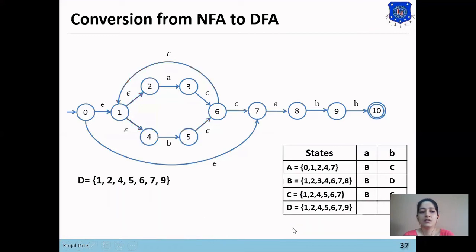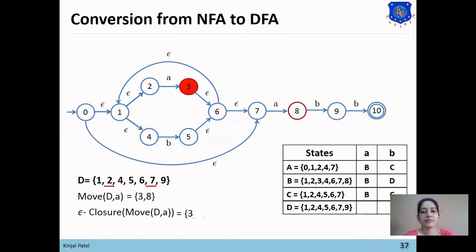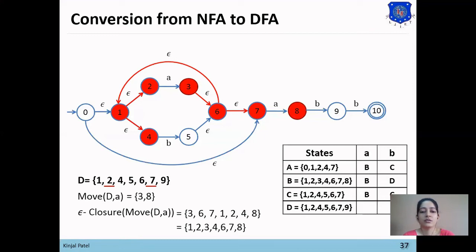Now we find transitions for state D = {1, 2, 4, 5, 6, 7, 9}. For move(D, a): states 2 and 7 have 'a' transitions to 3 and 8 respectively. The null closure of {3, 8} gives: 3, then 6, then 1 and 7, then 2 and 4, and 8 — resulting in {1, 2, 3, 4, 6, 7, 8}. This matches state B, so capital D on 'a' goes to state B.